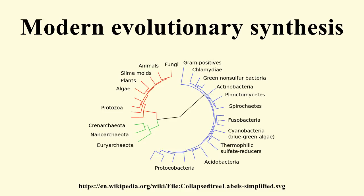The object of selection is the phenotype in its surrounding environment. The role of genetic drift is equivocal — though strongly supported initially by Dobzhansky, it was downgraded later as results from ecological genetics were obtained. Thinking in terms of populations rather than individuals is primary. The genetic diversity existing in natural populations is a key factor in evolution. The strength of natural selection in the wild is greater than previously expected. The effect of ecological factors such as niche occupation and the significance of barriers to gene flow are all important. In paleontology, the ability to explain historical observations by extrapolation from microevolution to macroevolution is proposed.